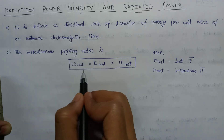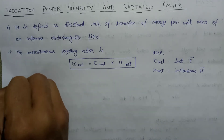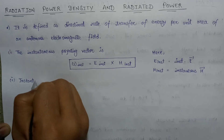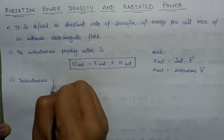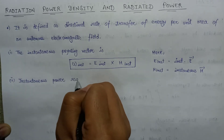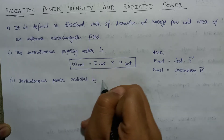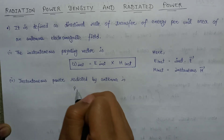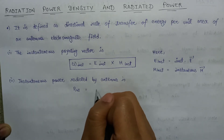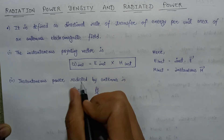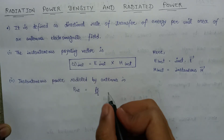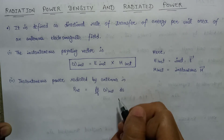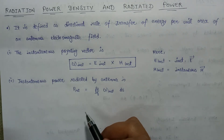The second step is the calculation for instantaneous power radiated by an antenna. The instantaneous power radiated by an antenna is given as P instantaneous, which is equal to the surface integral of W instantaneous — that is, the instantaneous Poynting vector — over the surface dS, where P instantaneous is nothing but the instantaneous power.